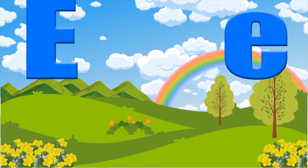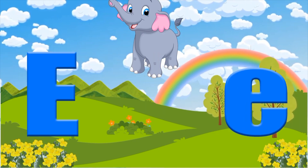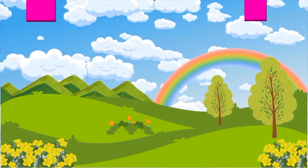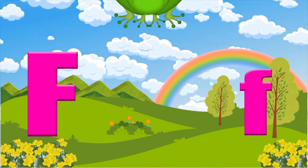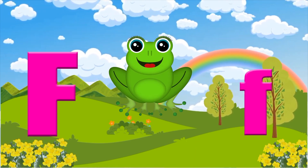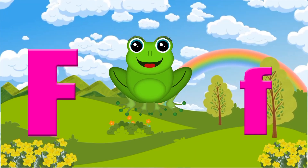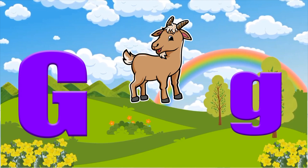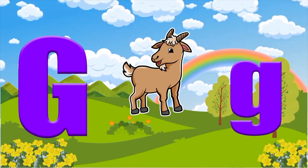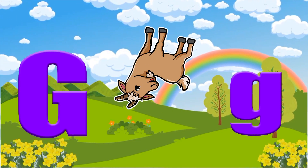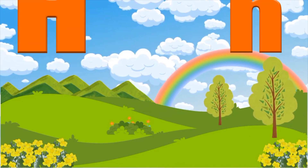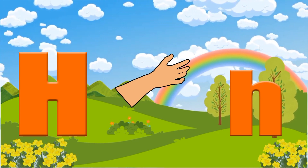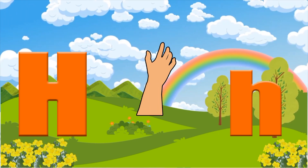E is for elephant, e-e-elephant. F is for frog, f-f-frog. G is for goat, g-g-goat. H is for hand, h-h-hand.